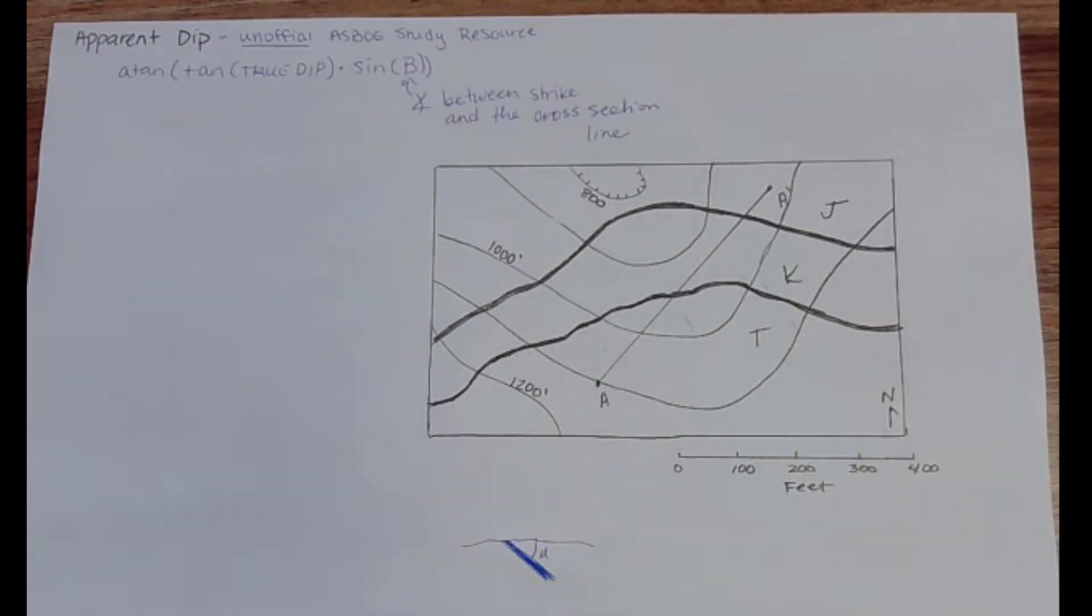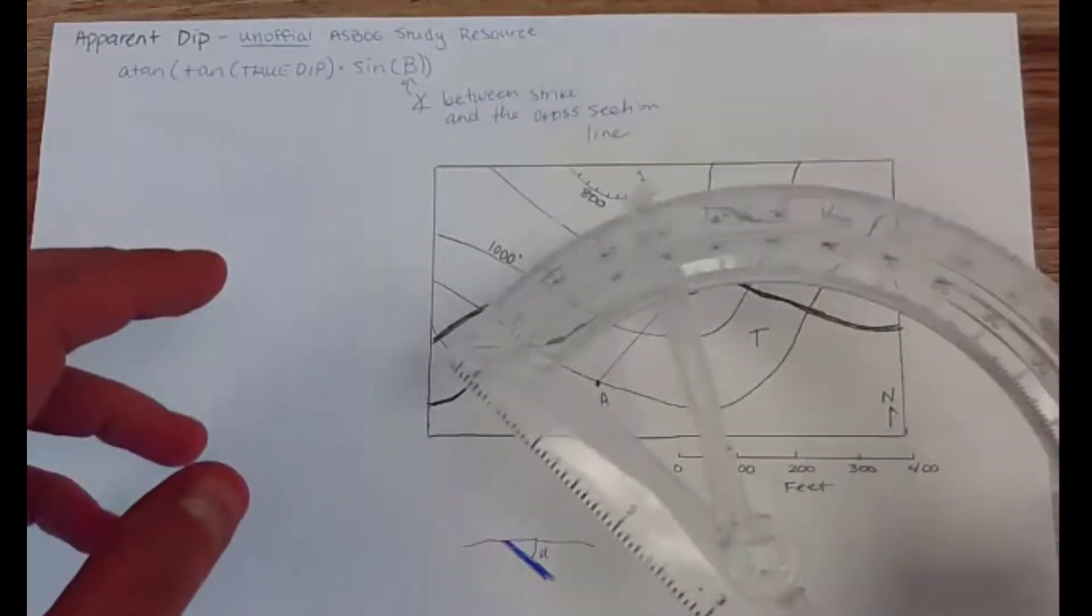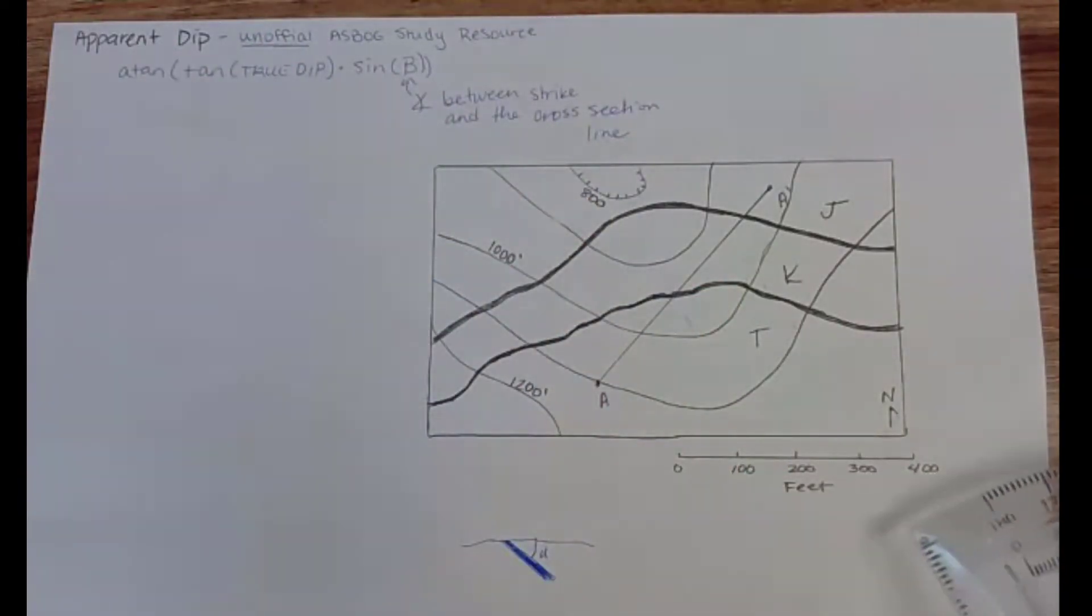Now when you go to do this on your calculator you need to make sure that your calculator is set to give you answers in degrees so that you're consistent with how you can measure things using your protractor on your map and the answers that you're getting.